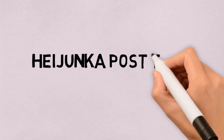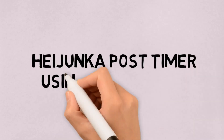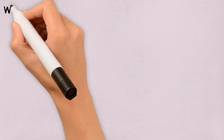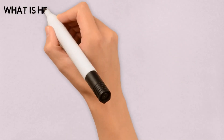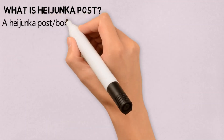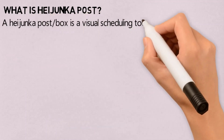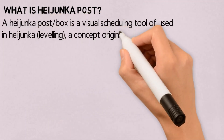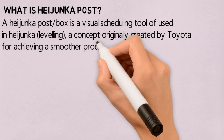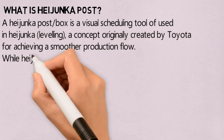In this video, I will explain about HiJunka Post Timer using Arduino Uno. A HiJunka Post is a visual scheduling tool used in HiJunka, or leveling, a concept originally created by Toyota for achieving a smoother production flow.